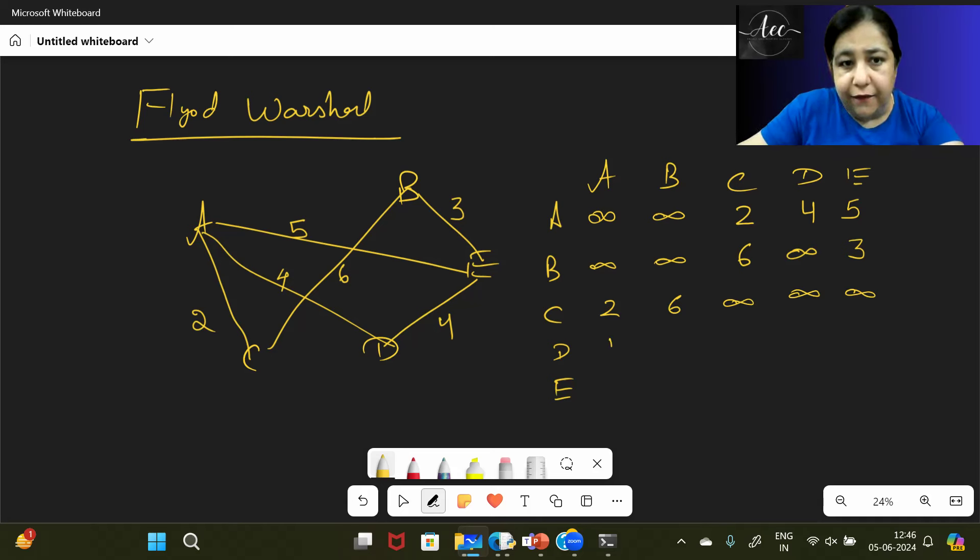Then you have D, D with A is 4, and with E is also 4, and all other places will be infinite. E's link is with B, B with E is 3, E with A is 5, B is 3, with C there's no direct link, with D is 4. So this is our original matrix from where we are going to start.